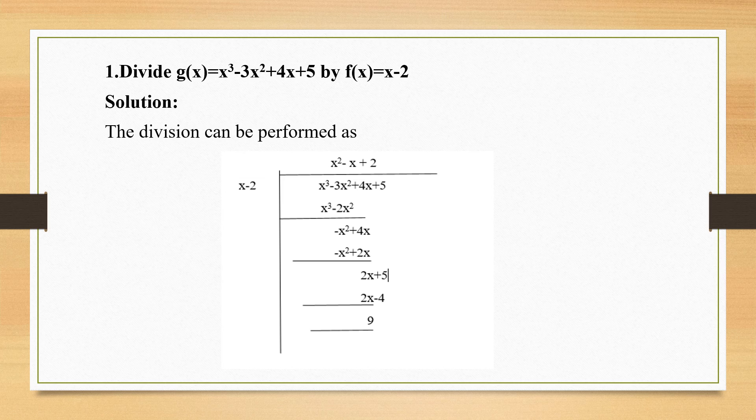Bring down this 5. I will multiply over x minus 2, I am getting 2x minus 4. When I change the sign, 2x and 2x will get cancelled. If I change the sign here, it's going to be 5 plus 4, which will give you 9 as my answer.